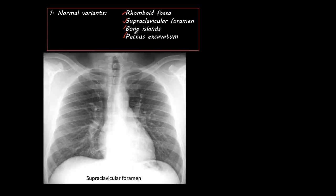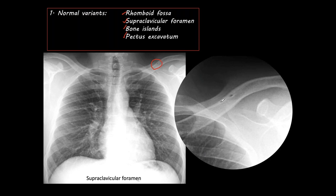It's a small hole with a sclerotic border and should not be confused with a real lesion. I know people have called it osteoid osteoma, but it shouldn't be — it's normal. I have even seen a case that was operated on because of this finding. So it's a supraclavicular foramen, which is not uncommon and should be distinguished from any pathological condition.